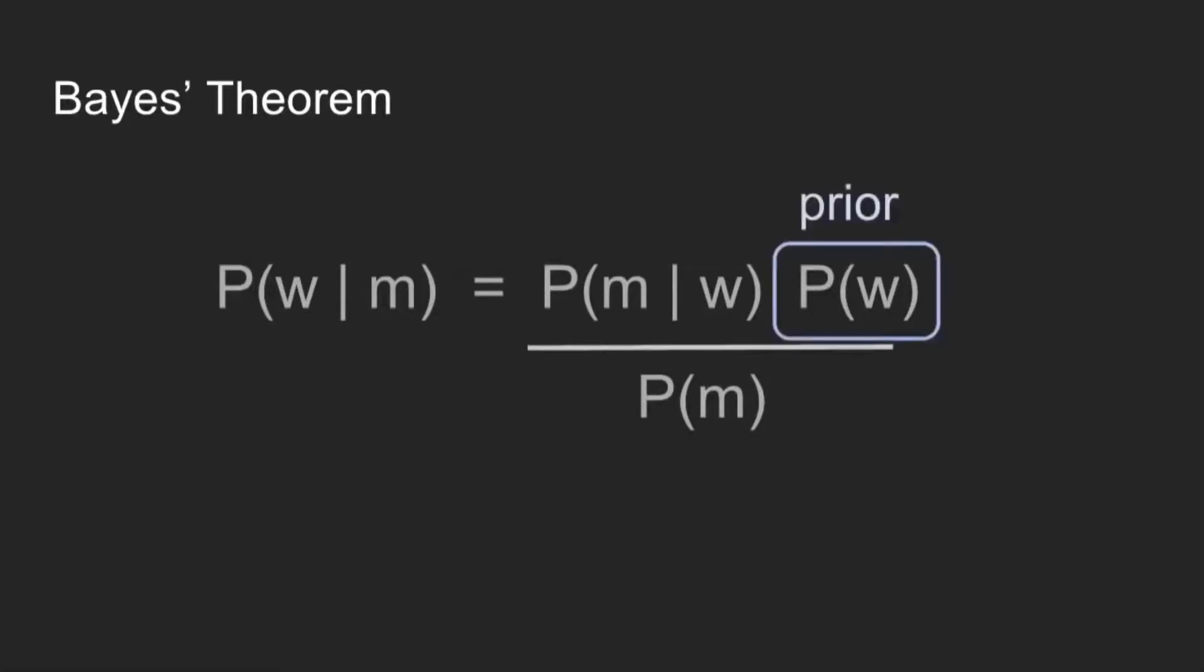This term over here, the probability distribution of the actual weight, is our prior. This is what we believe about her weight before we put her on the scale. The probability given a weight of getting certain measurements are the likelihood associated with those measurements. And then the posterior is what we believe about her weight given those measurements. So you can think of this as we start with a belief, we take some measurements, and we update it, and then we have a new belief when we're done.